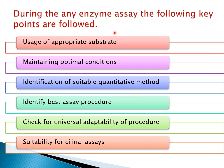During an enzyme assay, key points to follow include: choosing an appropriate substrate, since enzymes are very specific; maintaining optimal conditions including pH, temperature, use of appropriate buffer, and presence of cofactors; and identifying a suitable quantitative method such as titrometric, colorimetric, or spectrophotometric methods. One must choose the best assay procedure that suits their environment and check for universal adaptability, including suitability for clinical assays with limited enzyme availability.